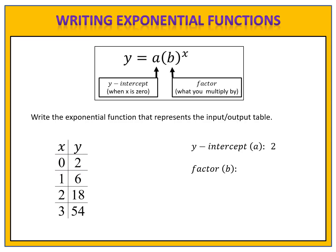Now we need to determine the factor — the b-value — which is what we multiply by repeatedly to generate the outputs shown in the table. The outputs go from 2, to 6, to 18, to 54. Sometimes you can determine the factor very easily. In this case, you might identify the factor as 3: 2 times 3 is 6, 6 times 3 is 18, 18 times 3 is 54.